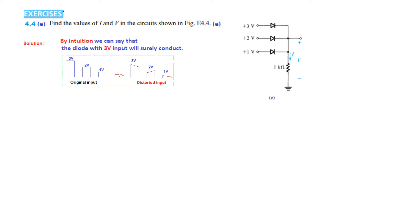During transmission the signals may get distorted, so the 1V and 2V inputs could become much smaller. But the 3V input will remain significantly large — maybe 2.5, 2.8, or 2.4 — so this one has the highest possibility of conducting. That is the logic behind assuming the 3V diode will definitely conduct.